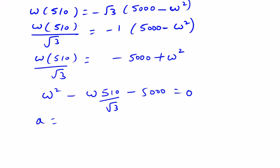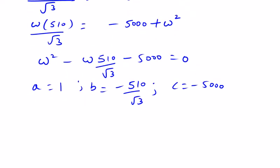Solving the quadratic equation with A=1, B=−510/√3, and C=−5000, we get ω equal to 310.54, which is approximately 311 MHz.